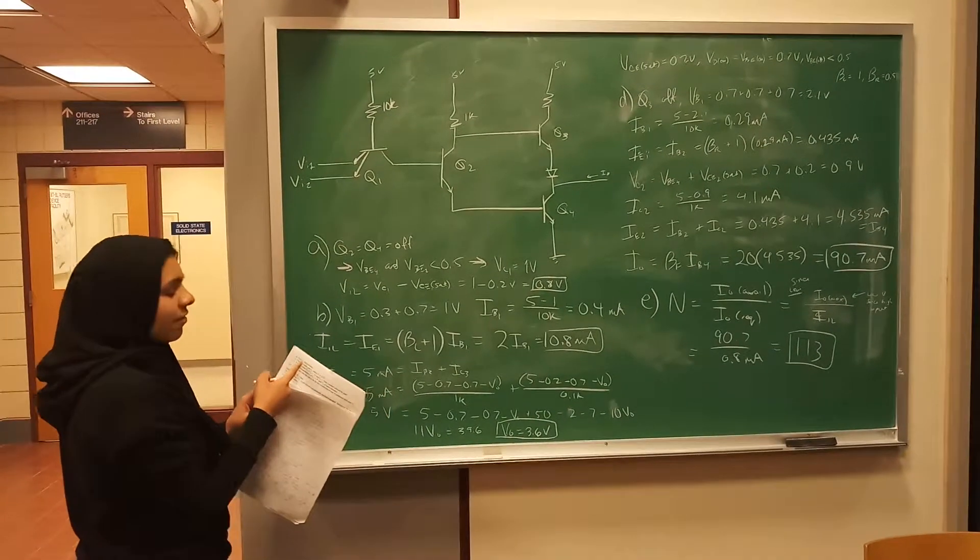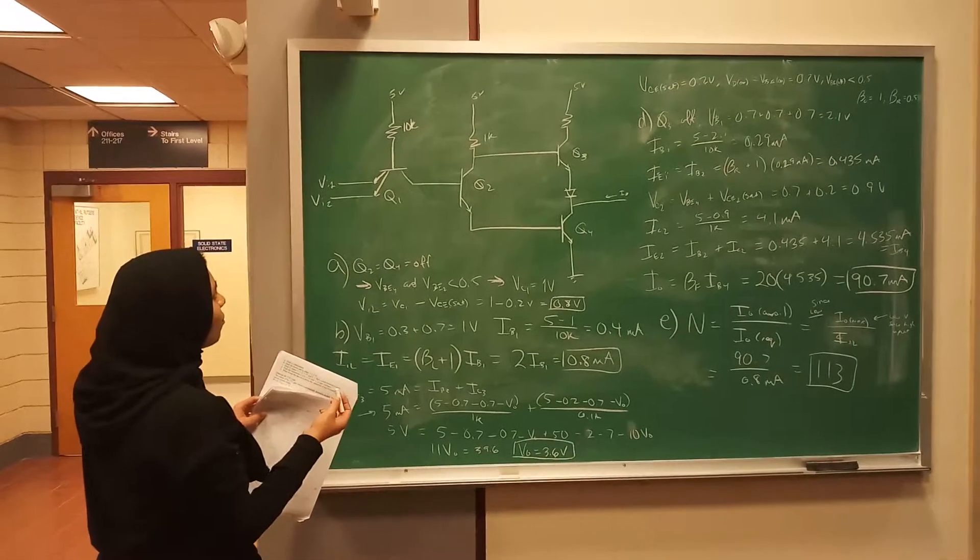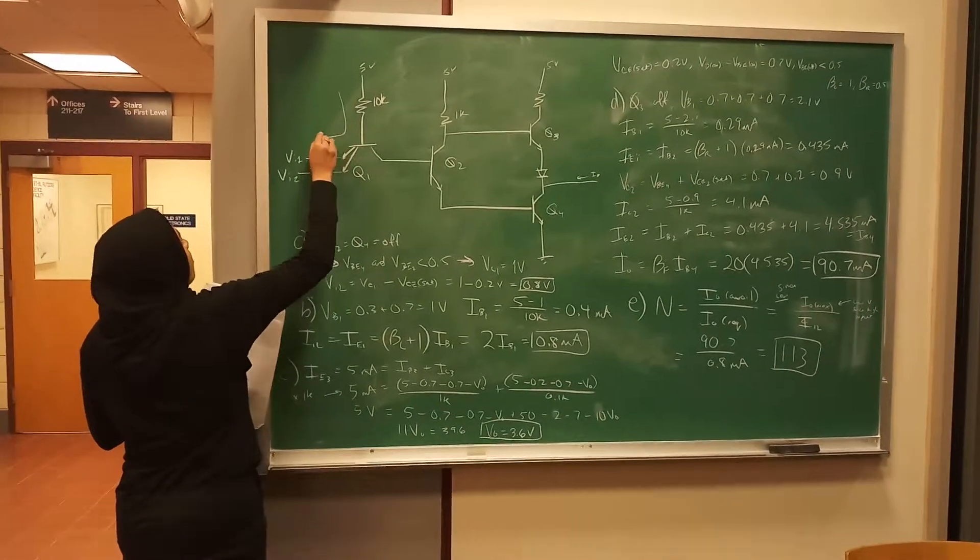So the first question is Part A: find V_input_low. We have to assume, since it's low, that all the current is going to go this way.